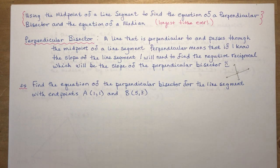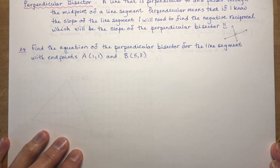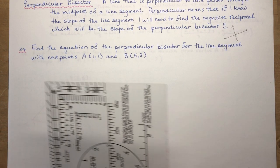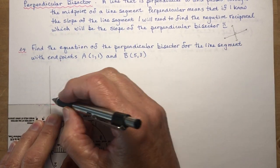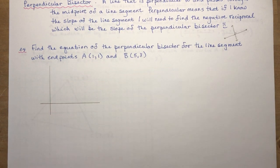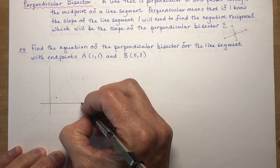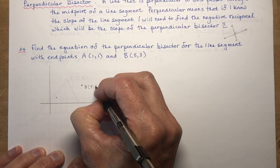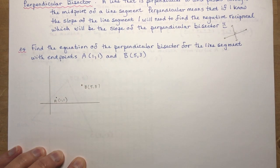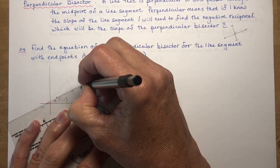Find the equation of the perpendicular bisector for the line segment with endpoints (1,1) and (5,3). Let's draw a little picture here. We're going to draw a line segment and approximate it. So let's go 1,1 and over to 5, up to 3. So that's B at (5,3) and A down here at (1,1), and this is my line segment. Remember you can't find the midpoint of a line — it has to be a line segment.